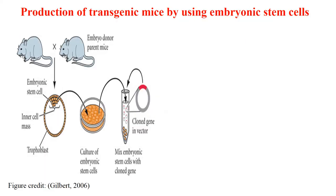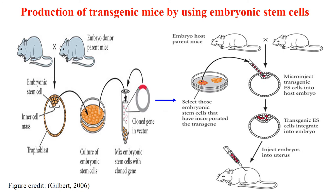This picture shows how we produce transgenic mice using embryonic stem cells. We take an embryo and isolate its embryonic stem cells, culture them, and transform them with the cloned gene in a vector. The successfully transformed cells are then transferred to the inner cell mass of another embryo, which is transplanted into the uterus of a surrogate mother, ultimately giving birth to the transgenic mice.